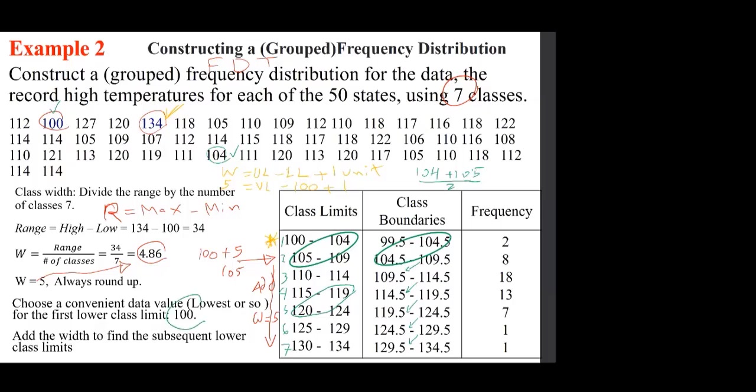Student: How do we get 99.5 for the lower class boundary? Professor: We don't choose it — we calculate it. We know 104.5 is the upper boundary of the first class. Subtract the class width of 5, and you get 99.5. We subtract 5 because that is the class width.